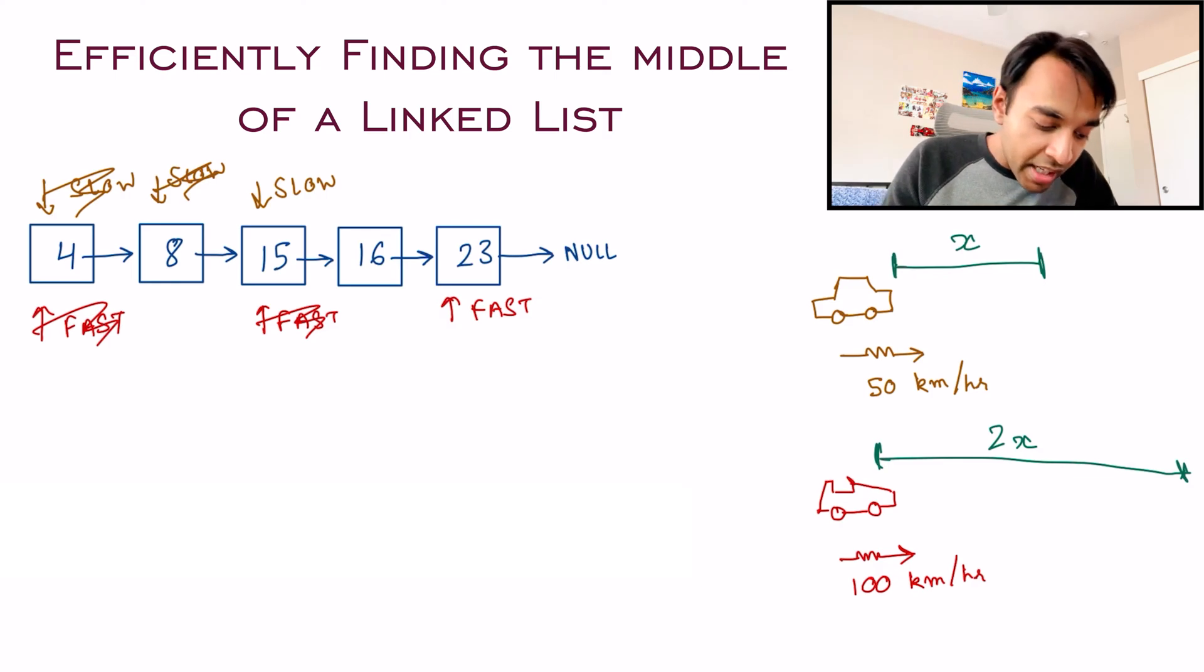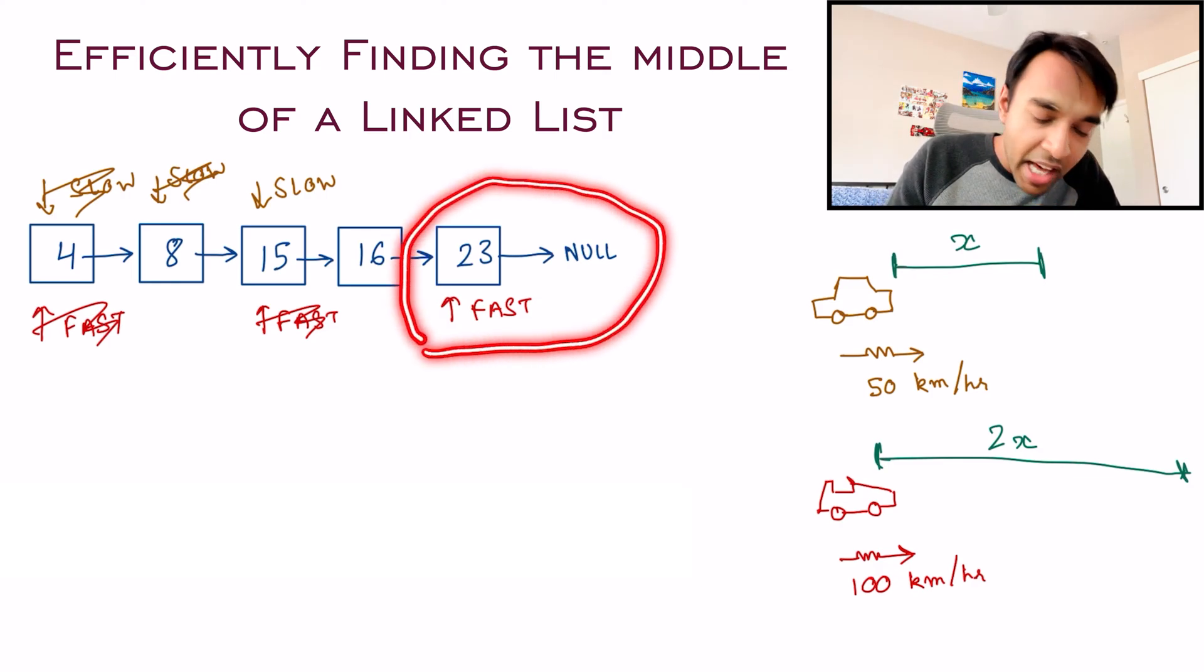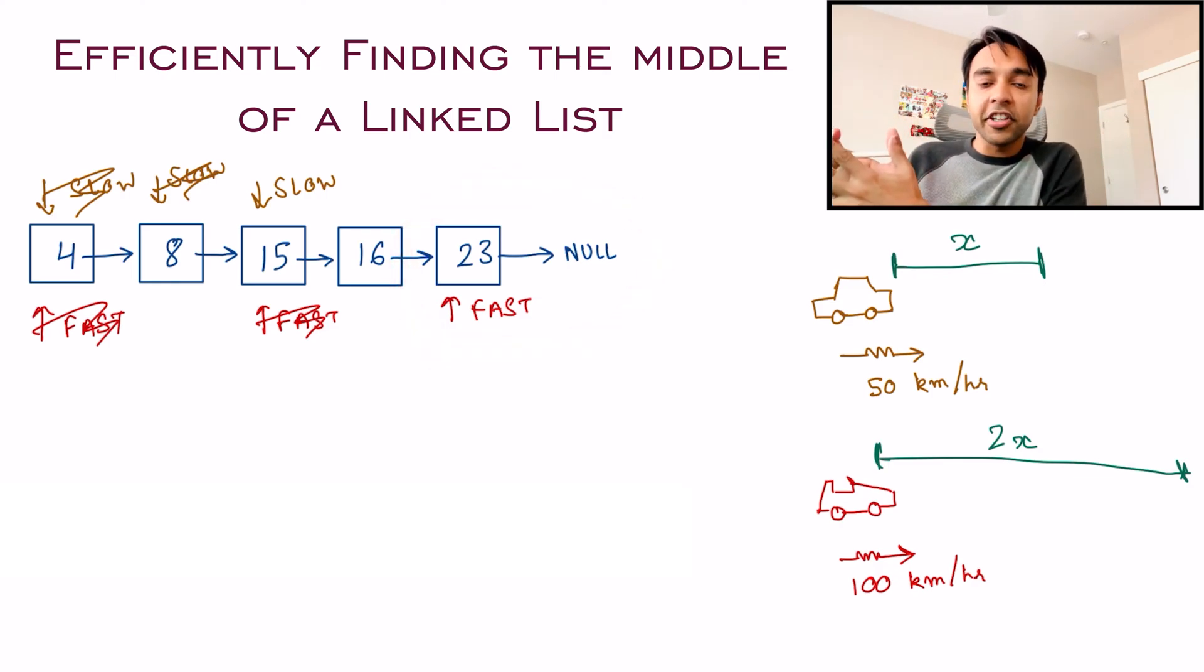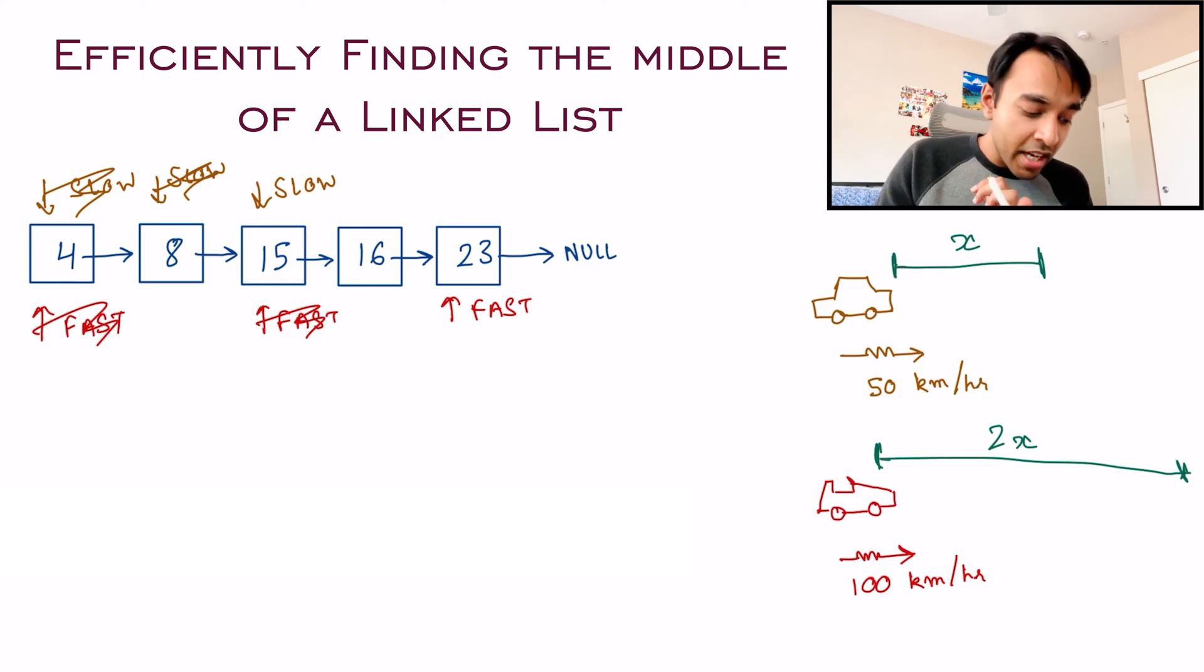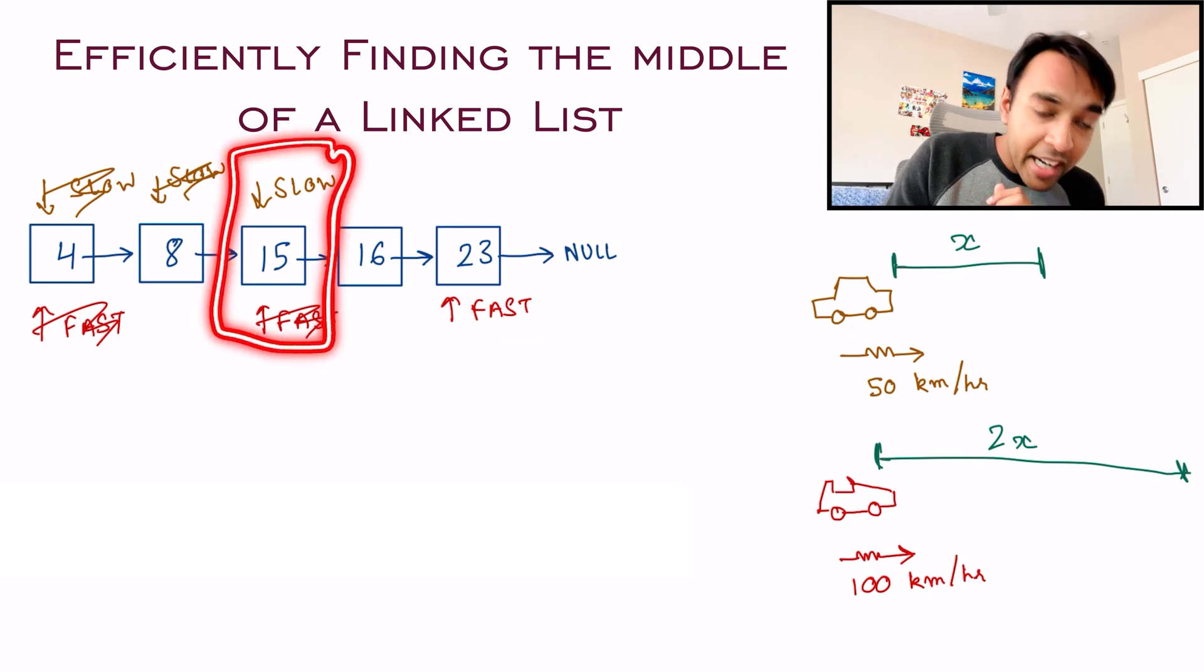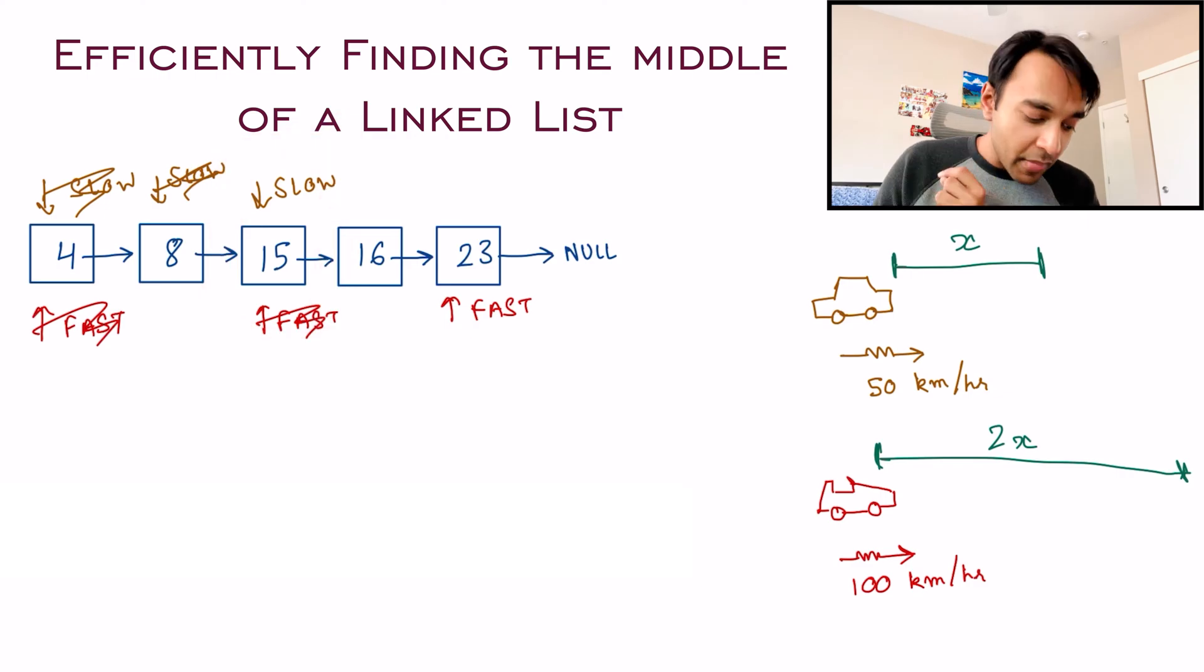Let us do one more iteration. The fast pointer will move 2 nodes and the slow pointer will only move 1 node. Now watch closely. This fast pointer has reached the end. It cannot go any further. So what does that tell you? The slow pointer will be at the middle of the linked list. So you can confidently say that 15 is your middle node.